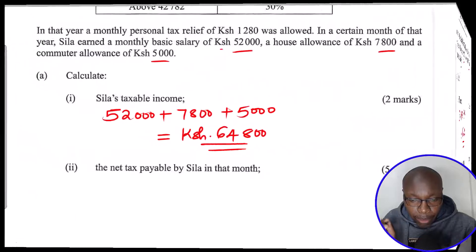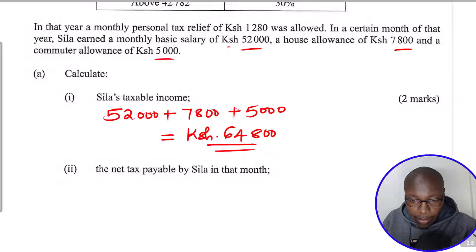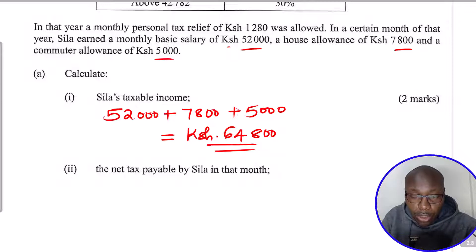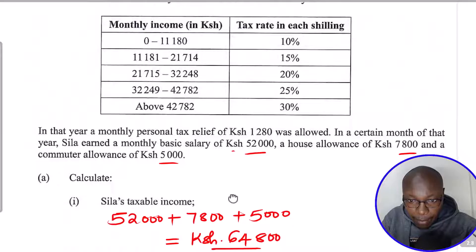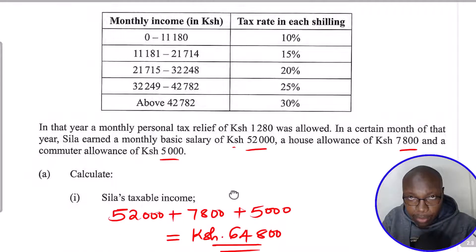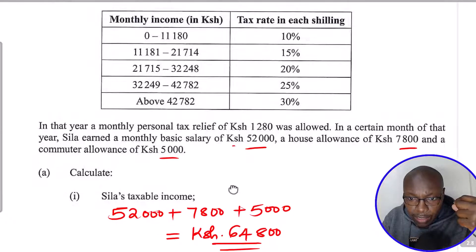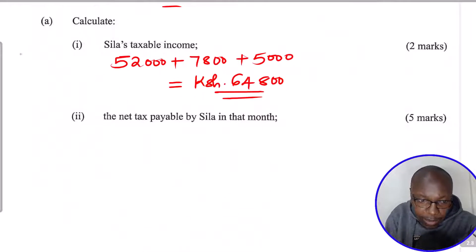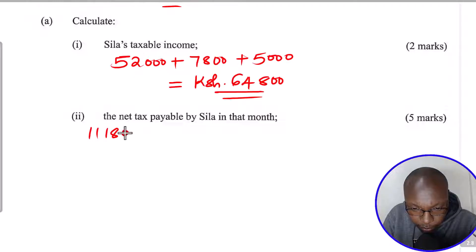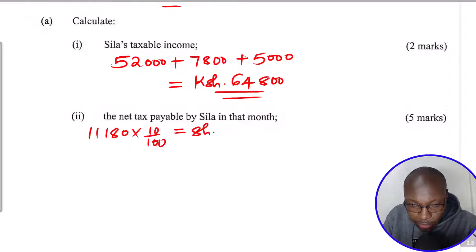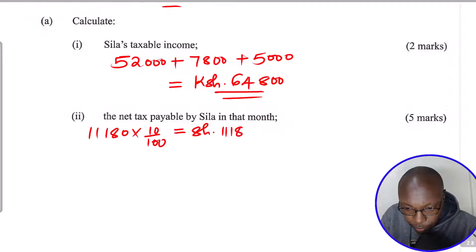For Part 2, we calculate the net tax payable by Sila. We use the taxable income of 64,800 and apply the taxation table slab by slab. The first slab is 0 to 11,180. The amount taxed in that slab is 11,180 at a rate of 10%, which gives a tax of 1,118.